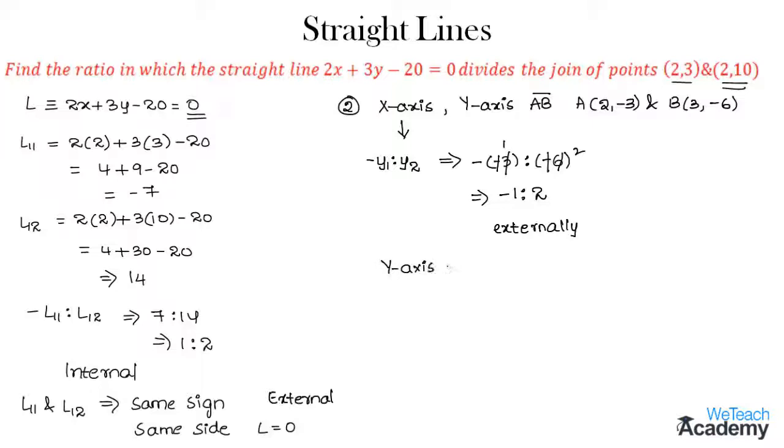Similarly, y-axis divides the line segment AB in the ratio minus x1 to x2. By substituting the values we get minus of x1 which is 2 to x2 which is 3.